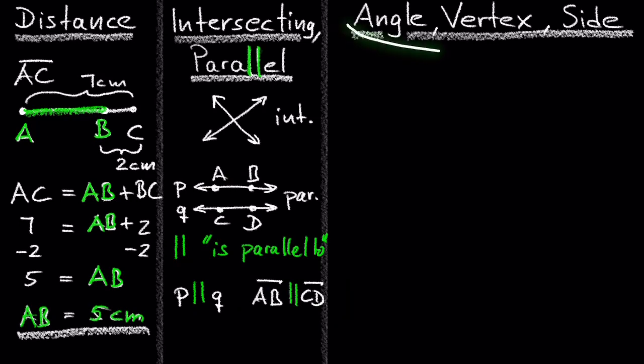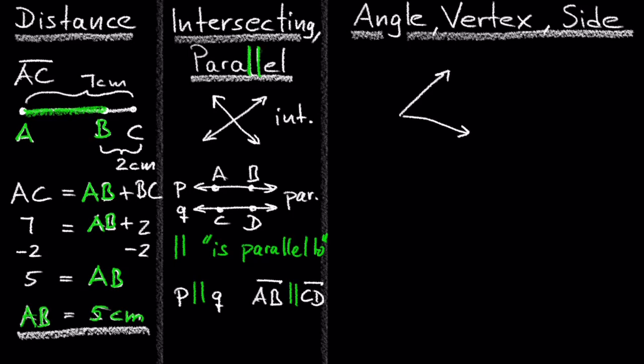What is an angle? A vertex and the side of an angle. An angle is formed by two rays with the same endpoint. The vertex of the angle is the point at which the two rays meet. The rays are called the sides of the angle.